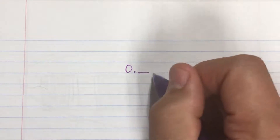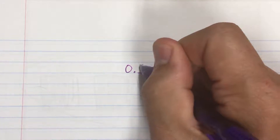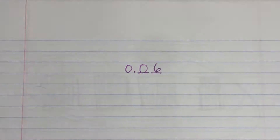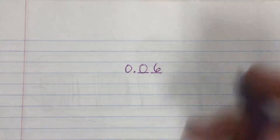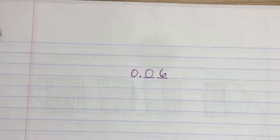For example, if I wanted to write six hundredths, I would need to have a decimal, a space for the tenths place, and then a space for the hundredths place. That's where my six is going to go, and then I'll put in a zero for any unfilled spaces. So here we have six hundredths.